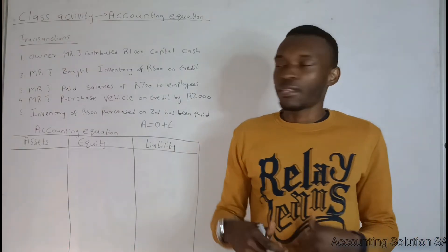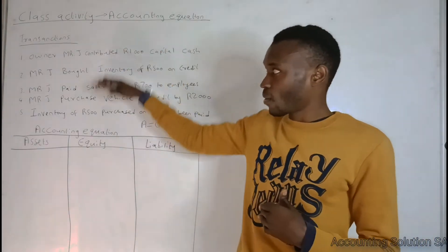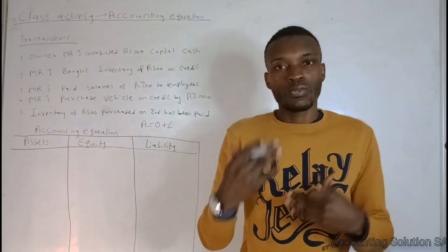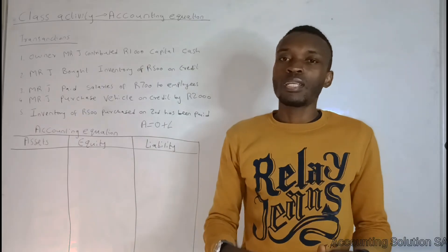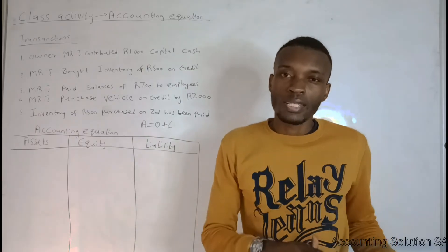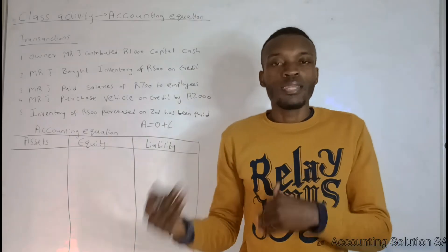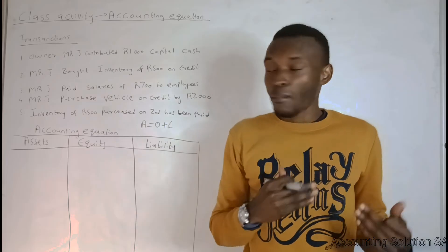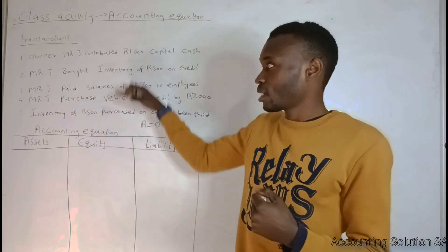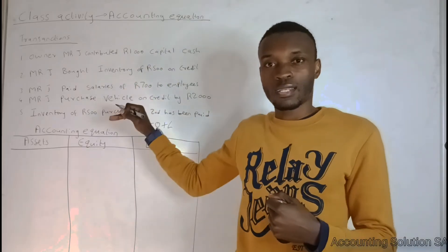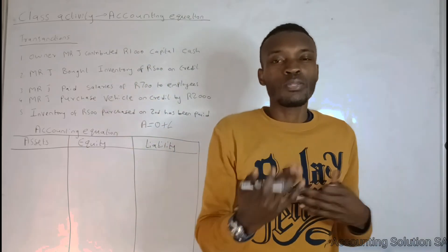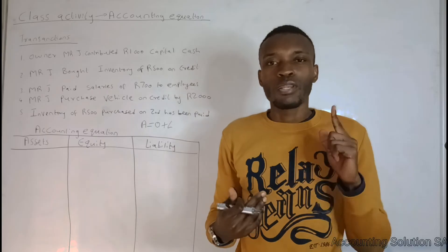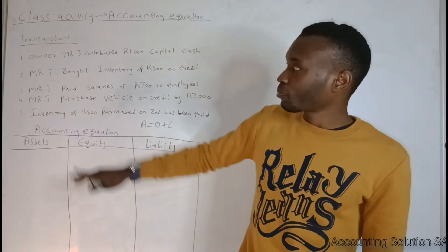Without wasting any more time, let's start with our transactions. When you read each transaction, you must identify two components, because we need two components for each transaction. There is no way that you can have a transaction with only one component.